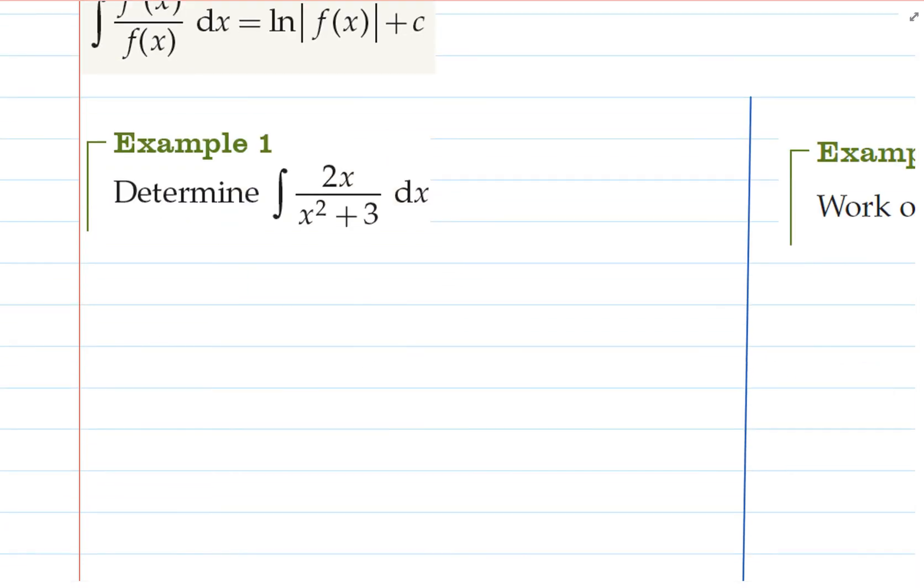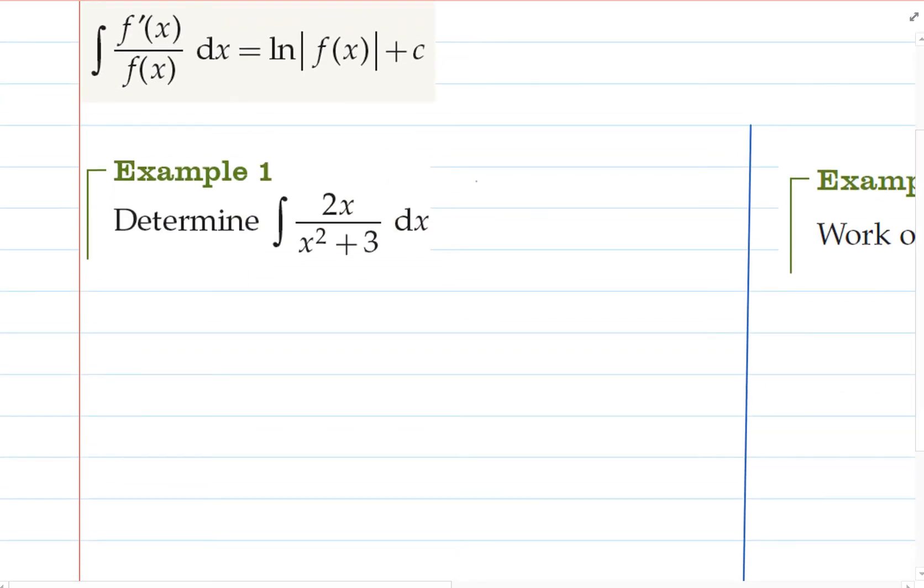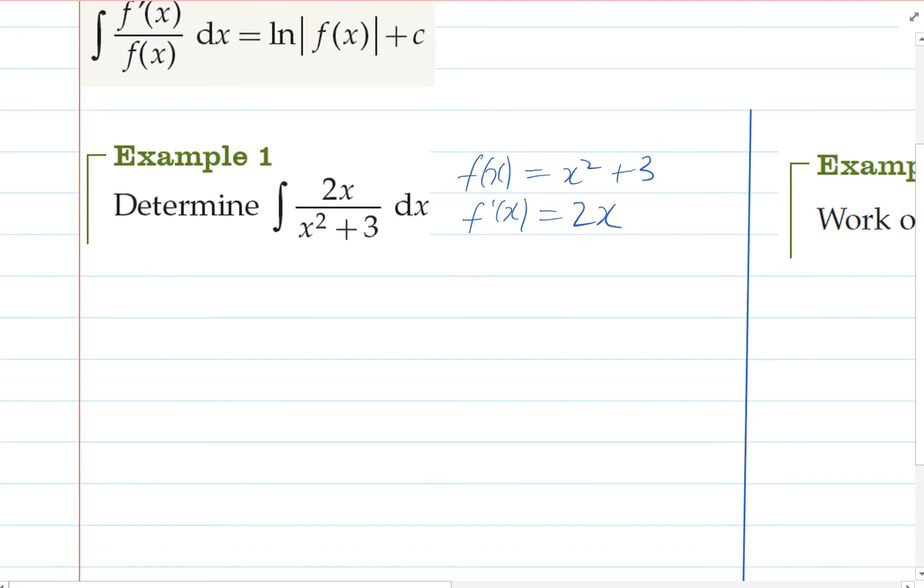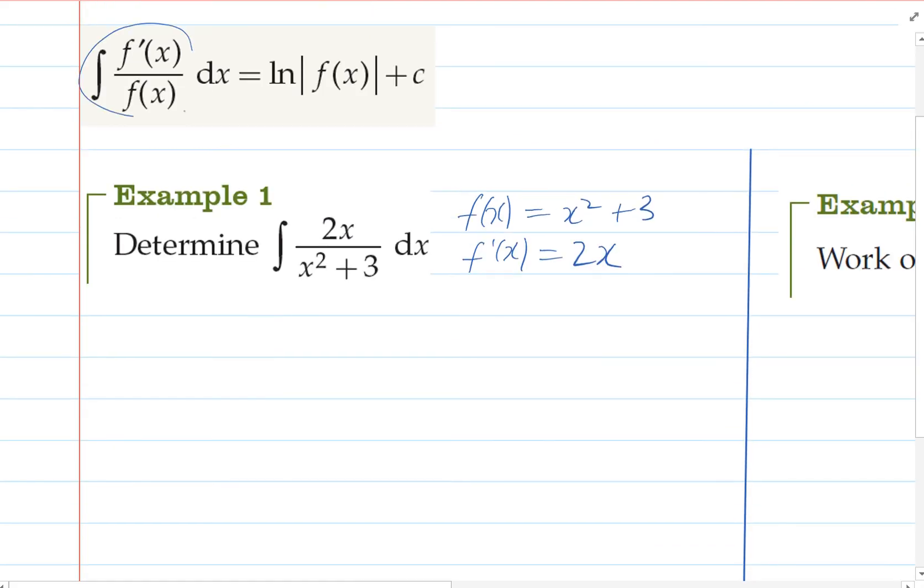Okay, so if we look at this first example here, our denominator function is x squared plus 3, and the derivative of that is 2x. So we can clearly see here that this first example is of this form.